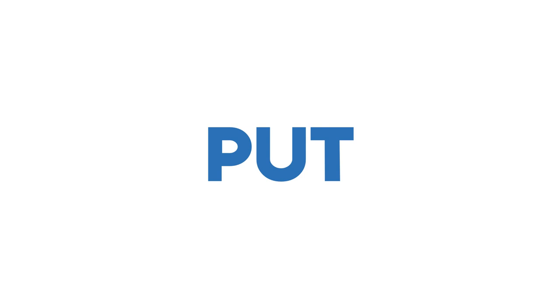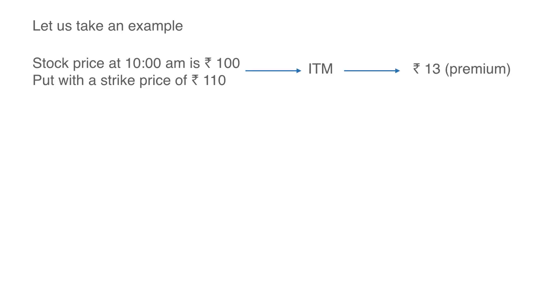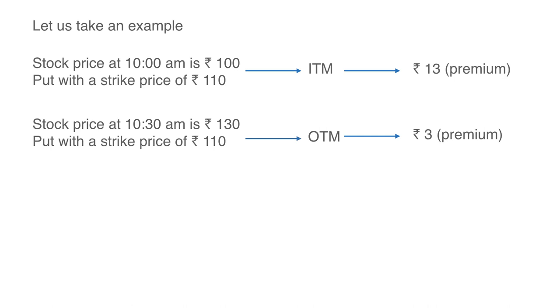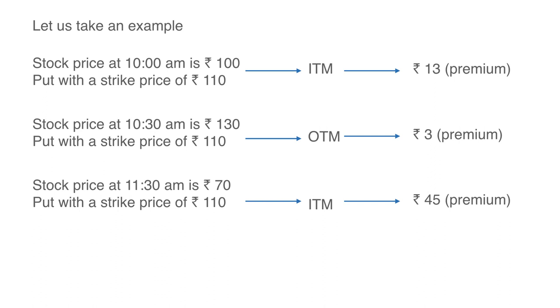Now let's take the example of a put. Let's say there's a stock whose market price at 10 am is Rs.100. A put with a strike price of Rs.110 will obviously be in the money and let's say it's trading at a premium of Rs.13. Now at 10.30, the stock price moves to 130. Then the put with a strike price of Rs.110 will obviously become out of the money and will start trading at a lower premium of Rs.3. Now at 11 am, the stock price moves to 70, in which case the put with a strike price of Rs.110 will obviously become in the money and will start trading at a higher premium of Rs.45.